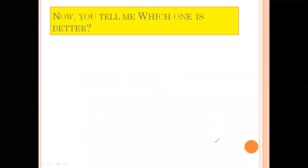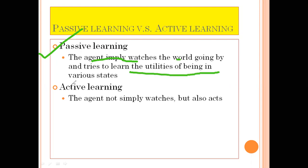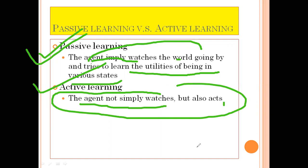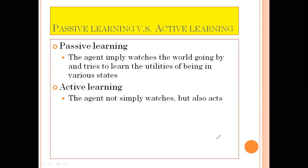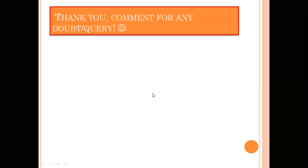Two more terms: passive learning versus active learning. Passive learning means the agent watches the world going by and tries to learn the utilities of being in various states, but it is not acting. In active learning, the agent is actively interacting with the world and tries to learn the utilities of being in various states. Question four: tell me the advantages and drawbacks of passive learning and active learning.